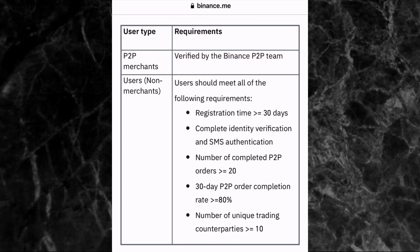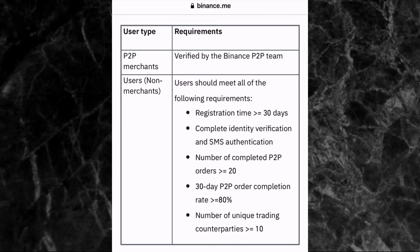The third requirement is that the number of completed P2P orders must be greater than or equal to 20 — you must have done at least 20 P2P orders. The fourth requirement is your 30-day P2P order completion rate must be greater than or equal to 80%, meaning you must have completed at least 80% of your trades in the last 30 days. The fifth requirement is that the number of unique trading counterparties must be greater than or equal to 10 — you must have traded with at least 10 different people on Binance P2P.